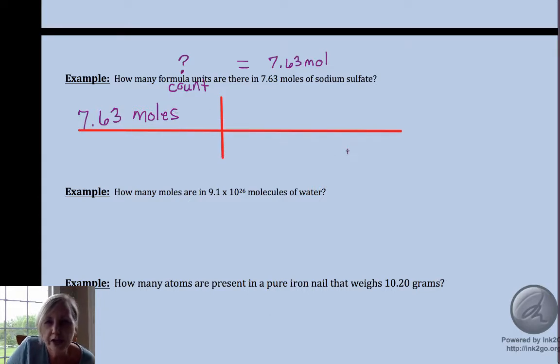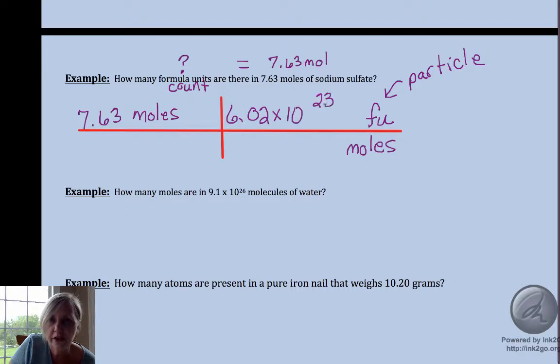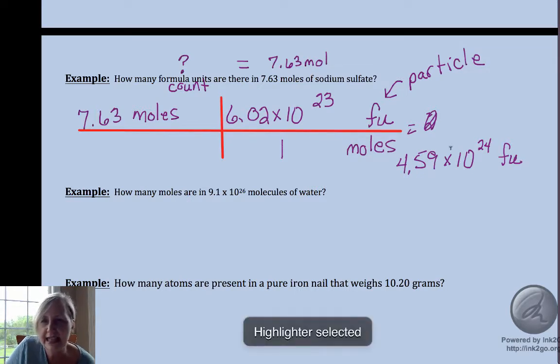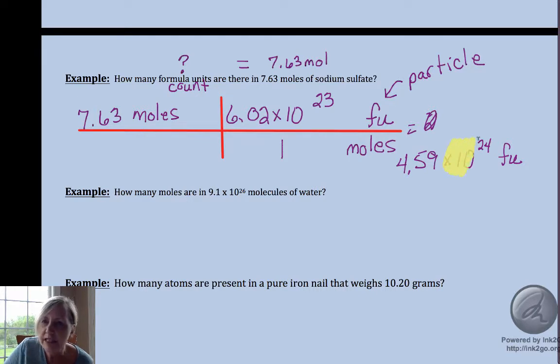I have moles in my numerator, I want moles in my denominator. I want to go to formula units. The formula unit is the particle that you can count, and so that's where you want to put your 6.02 times 10 to the 23rd per one mole. The answer that I got is 4.59 times 10 to the 24th formula units. Now be really careful—I just got back from grading the AP test, and I was really surprised by how many students forgot to bring that exponent times 10 to the 24th down from their calculator. They're in a hurry, they're tired, and they just grabbed that 4.59 and forgot the exponent.